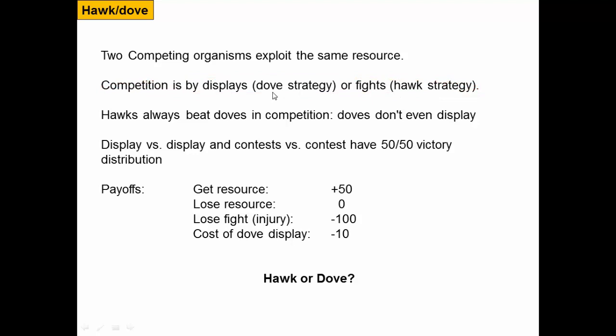When there's a competition between a dove and a hawk, hawks always beat doves because they're willing to cause physical damage and fight. Because doves are aware of this, we consider that they don't even display. So two individuals show up and will either do displays or have a fight to get the resource, and in display-versus-display or fight-versus-fight contests, there's a 50-50 victory probability for each individual.